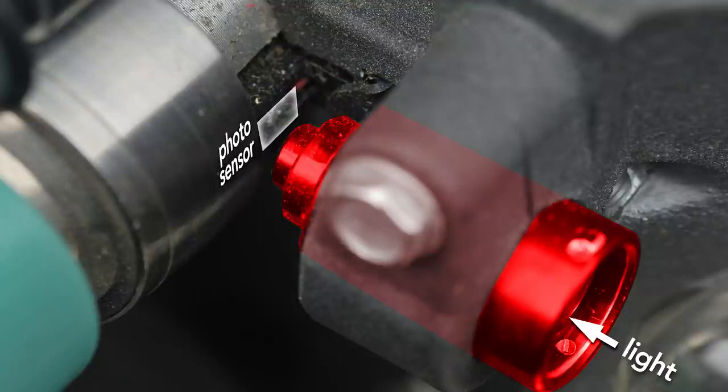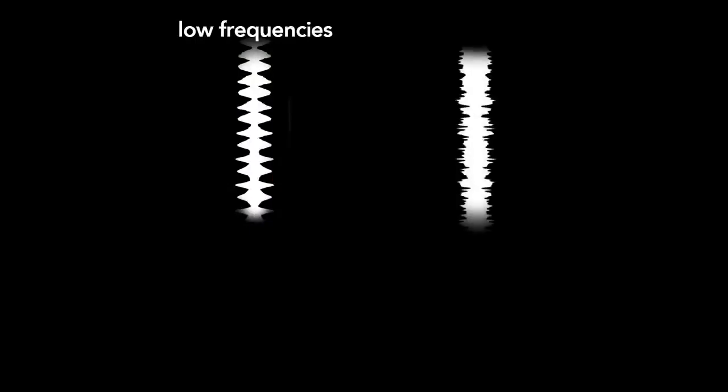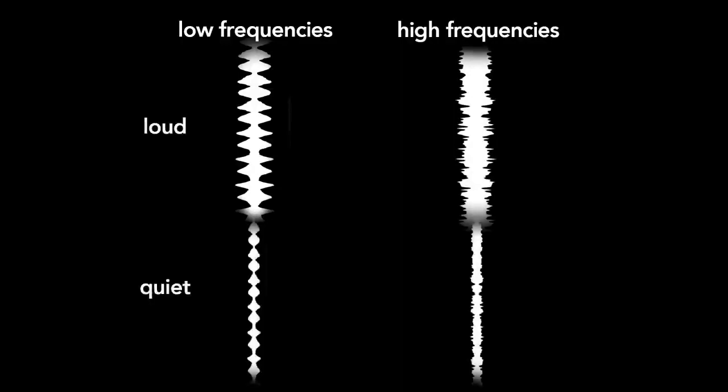The photosensor converts the amount of light transmitted into current, and this current drives the speakers. A soundtrack that oscillates slowly produces low-frequency sounds. If it oscillates more rapidly, it will produce higher frequencies. The volume is determined by the amplitude or width of the soundtrack. Louder sections are wide, and quieter sections are thinner.